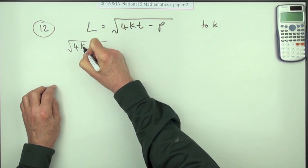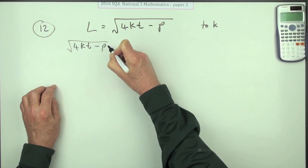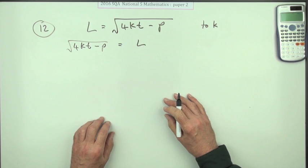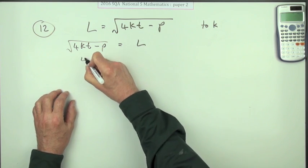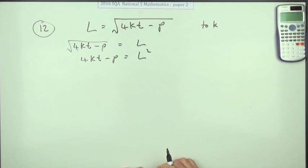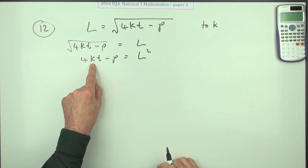Square root of 4KT minus P is equal to L. Right, haven't done anything though. First thing, get rid of that square root. 4KT minus P equals L squared. That's squaring both sides. Now to get to K, there's really just two steps left.